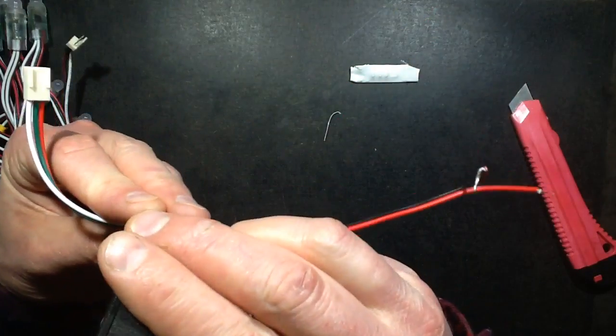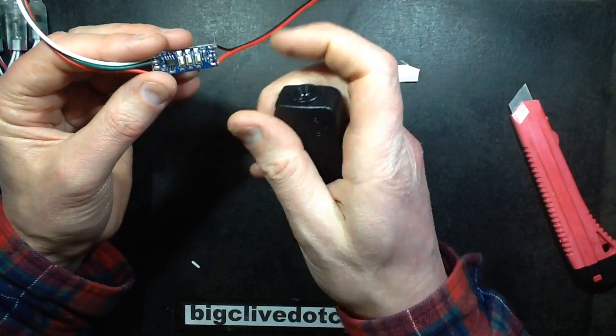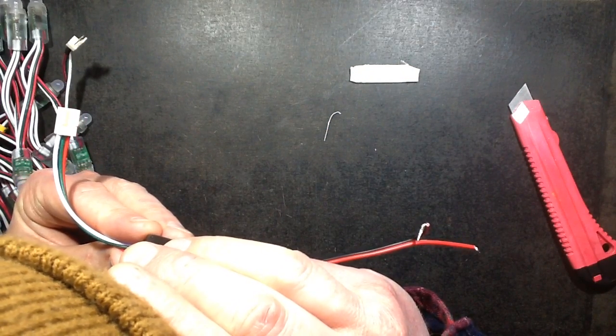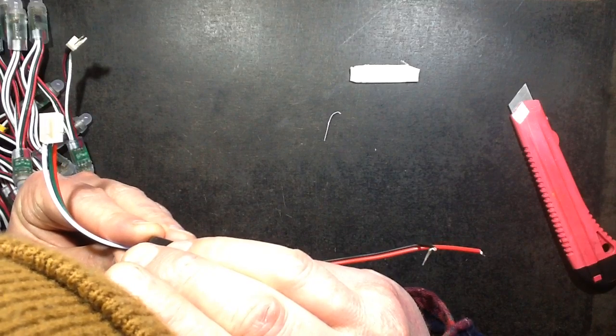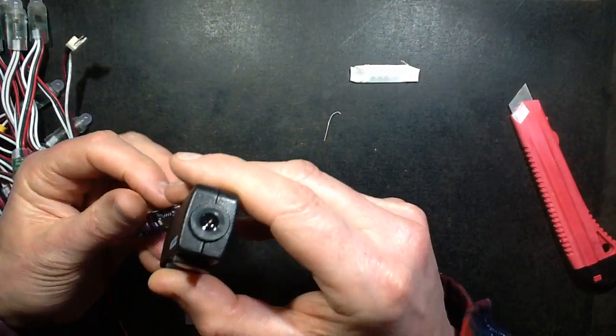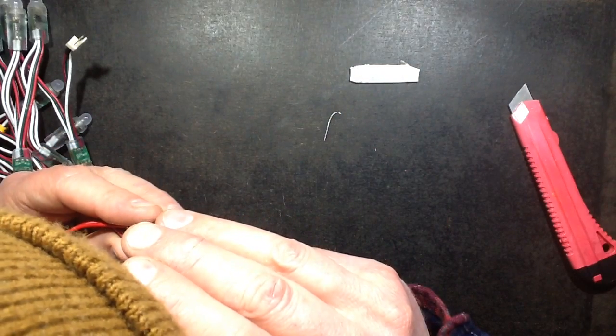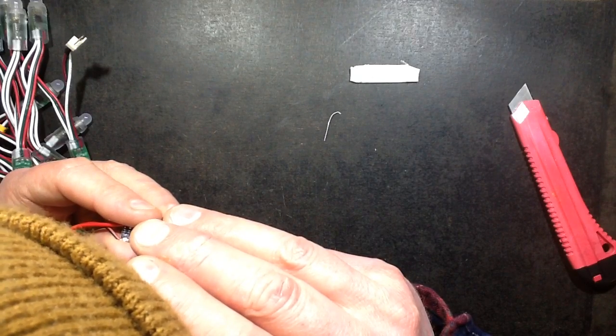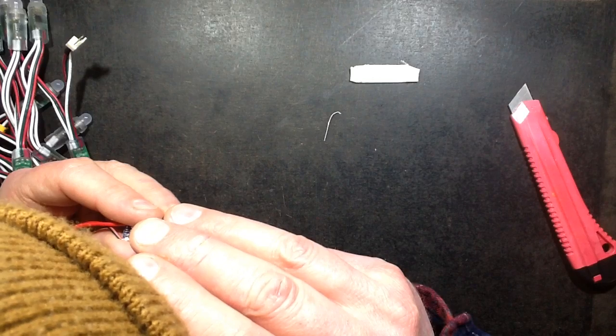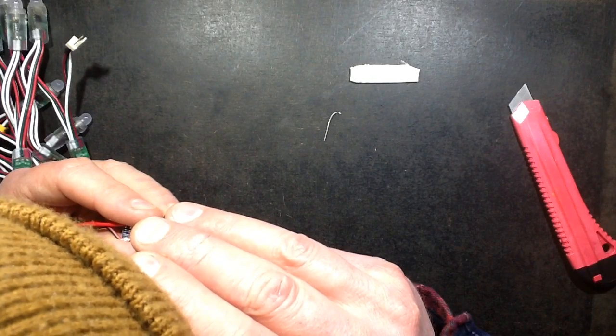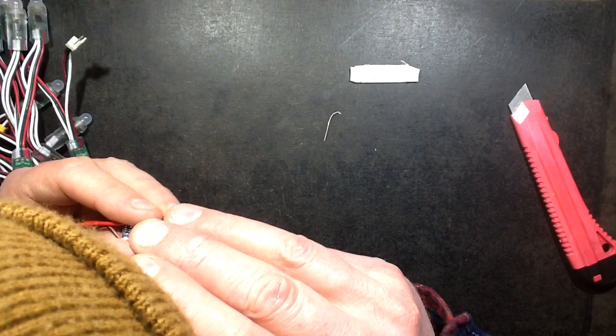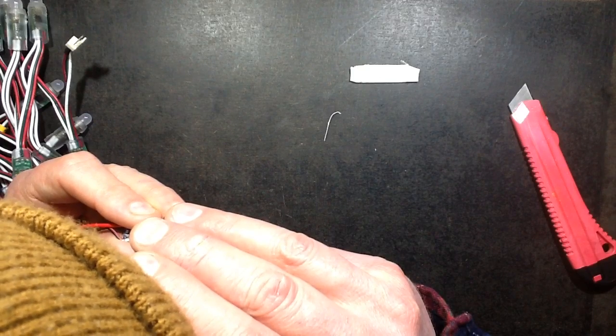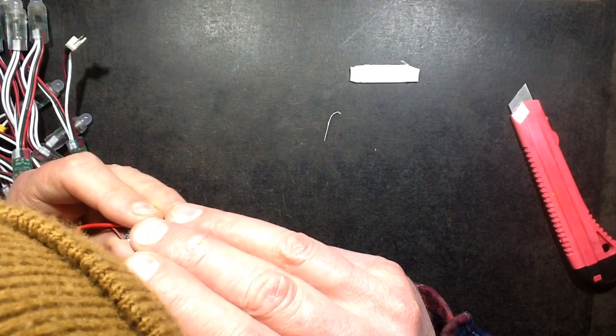It does have a number on it, the microcontroller. Let's take a look at that. It's tiny as usual, so let's get the microscope on it. Might even put the light on the microscope so I can actually see something. I had it and I've lost it again.